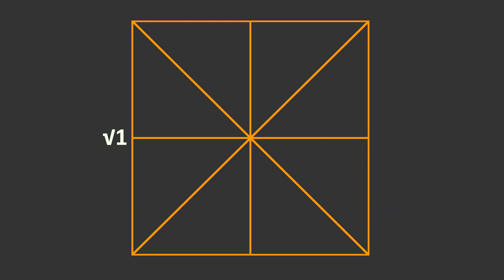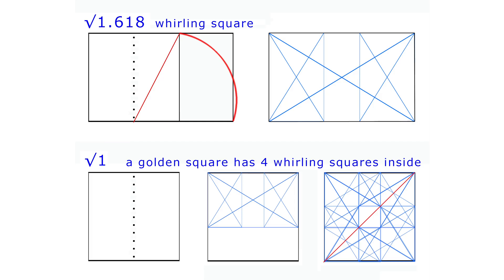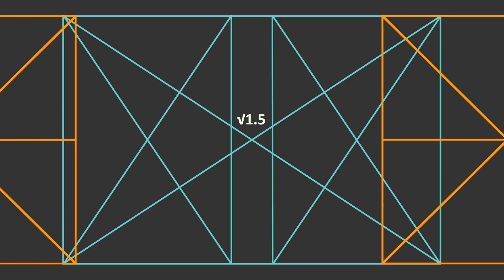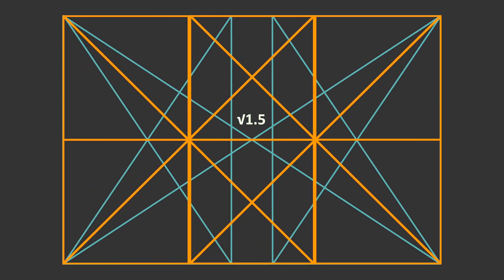That leaves us with the square, or the root 1. It generates its own rectangles, like the whirling square or the 1.5. Using it within rectangles is actually my favorite way to design, and it's what I do best.